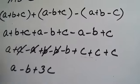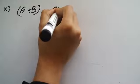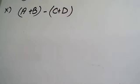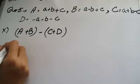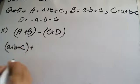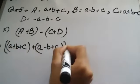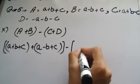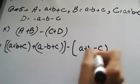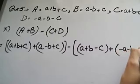Now I will tell you part number 10. The expression is A plus B minus C plus D. Put in: A value is a plus b plus c; B value is a minus b plus c; the expression for part 10 is a plus b minus c; and D value is minus a minus b minus c.